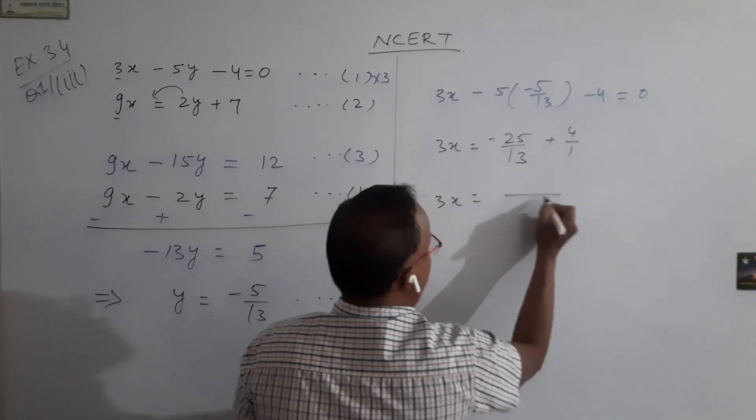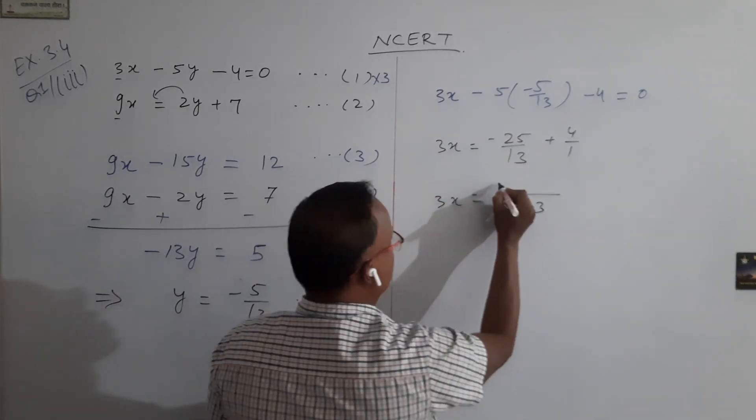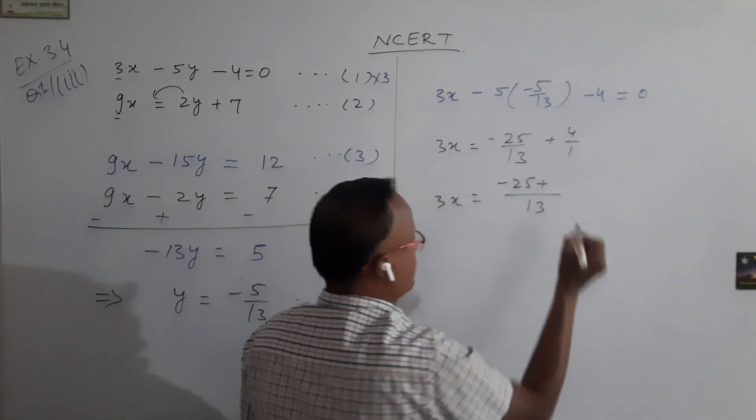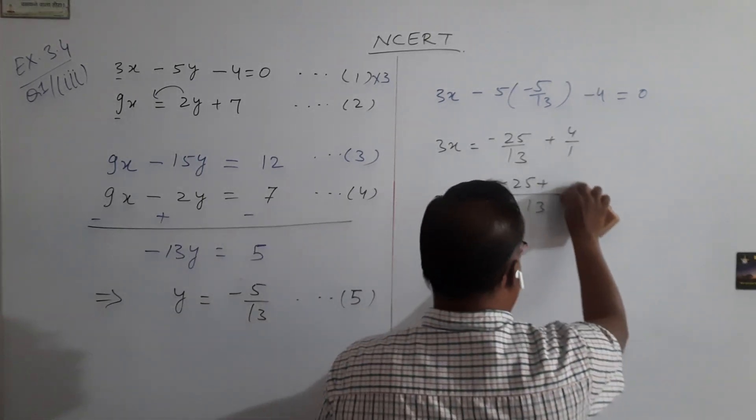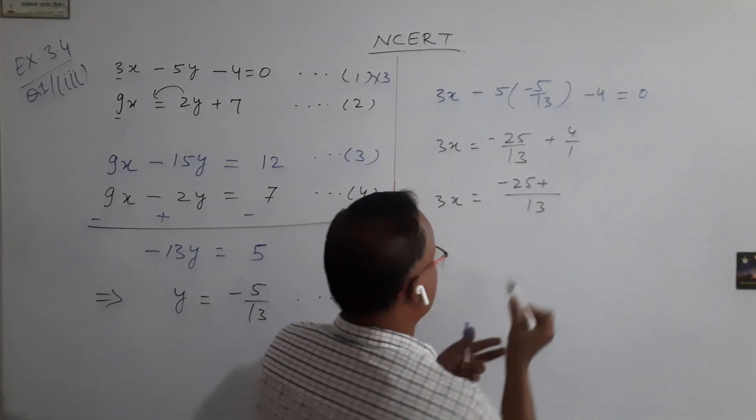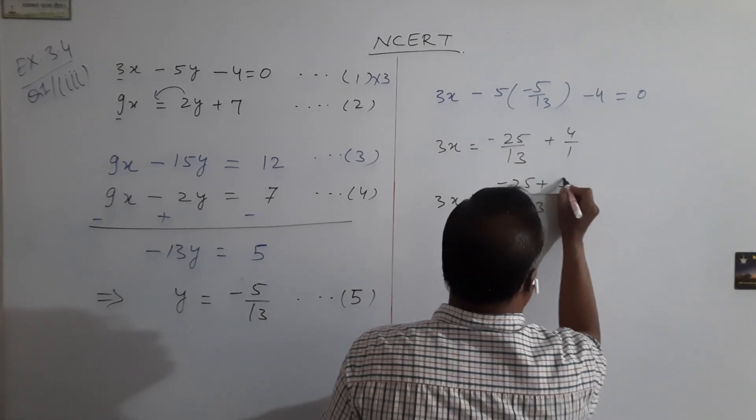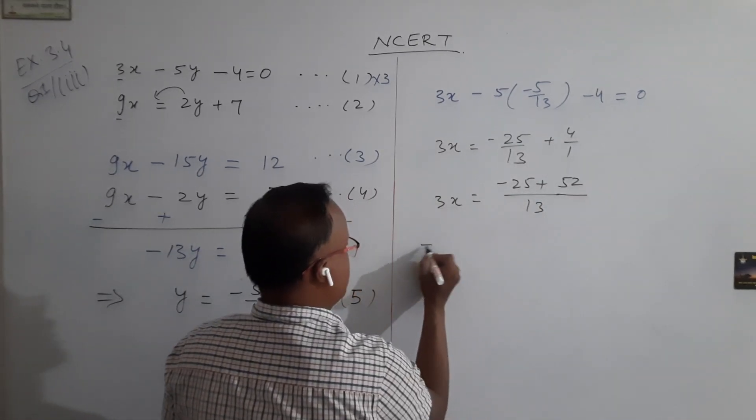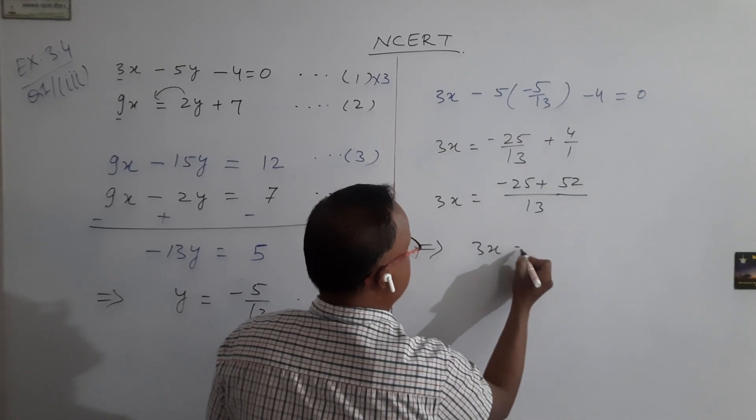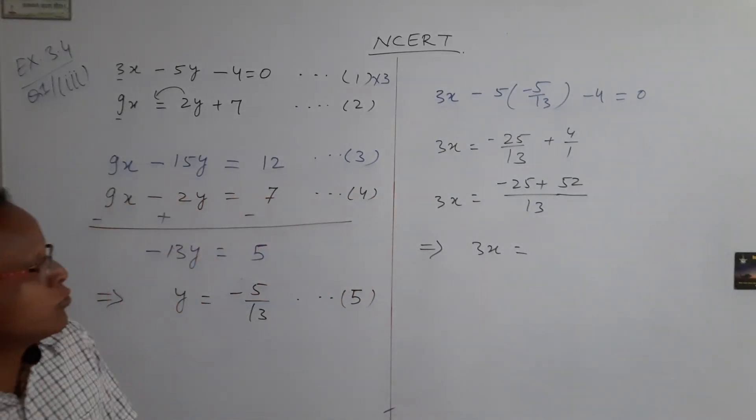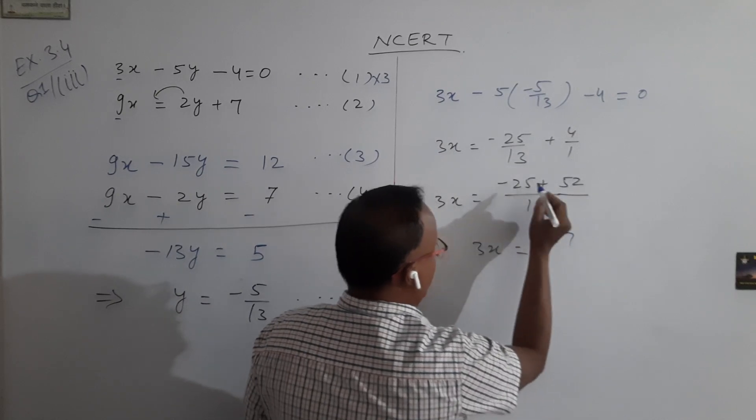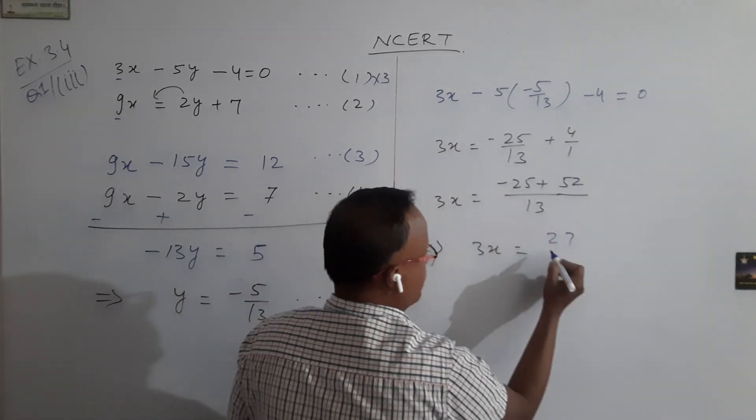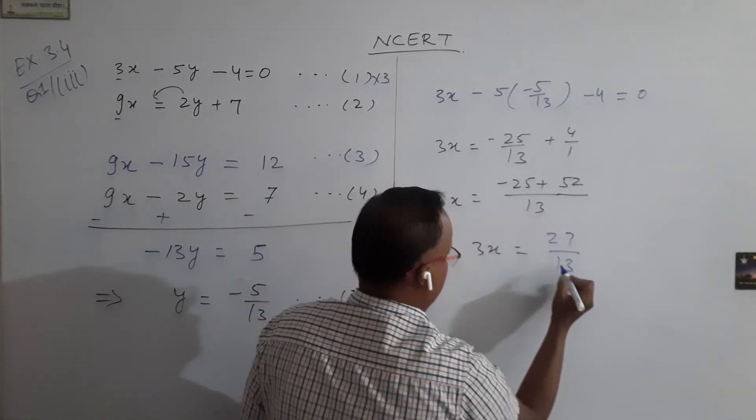So 3x equal to, taking LCM 13, minus 25 and 4 times 13 is 52. So 3x is equal to 52 minus 25 is 27, upon 13. Now bigger is positive, 52 is positive, upon 13.